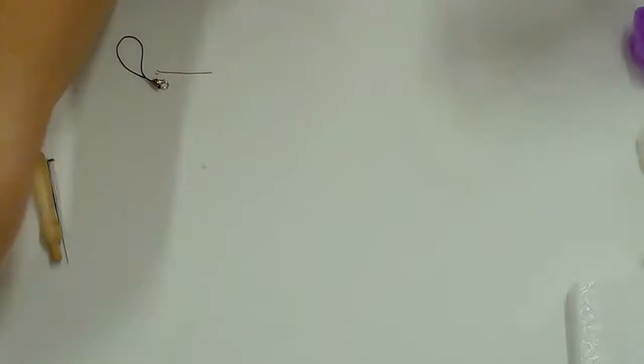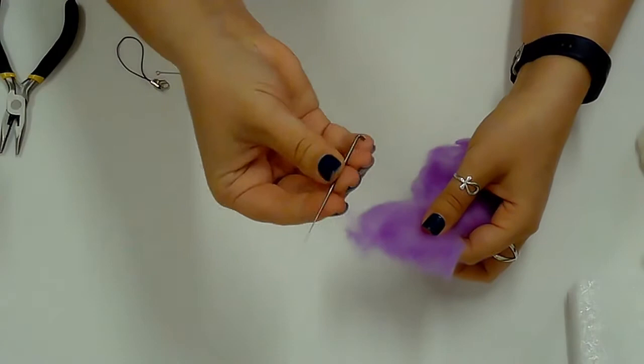Needle felting uses roving wool and a triangle barbed needle to compact the fibers and make different shapes.